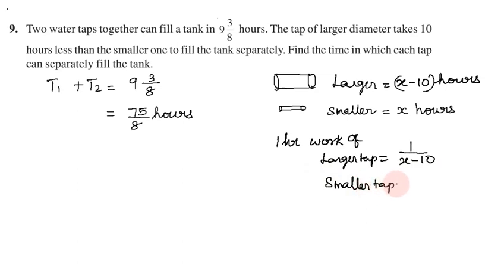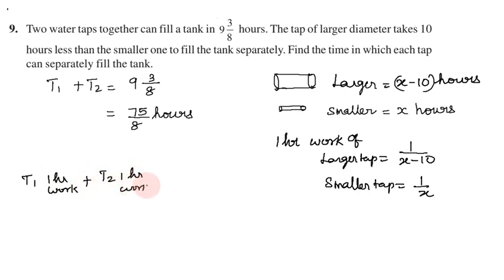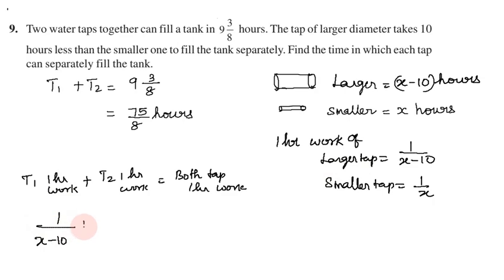The one hour work of the smaller tap is 1 by x. Adding the one hour work of tap 1 and tap 2 together gives the combined one hour work, which equals 8 by 75.